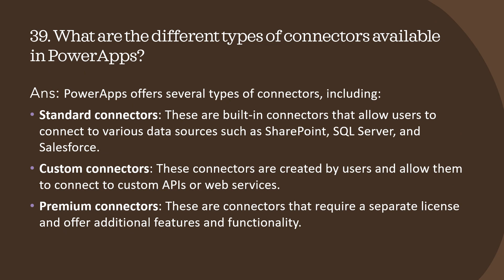Question 39: what are the different types of connectors available in Power Apps? There are mainly three types: standard connectors, custom connectors, and premium connectors. Standard connectors are built-in connectors that allow users to connect to data sources such as SharePoint, SQL Server, and Salesforce. Custom connectors are created by users and allow them to connect to custom APIs or web services. Premium connectors require a separate license and offer additional features and functionality beyond what Power Apps provides by default.